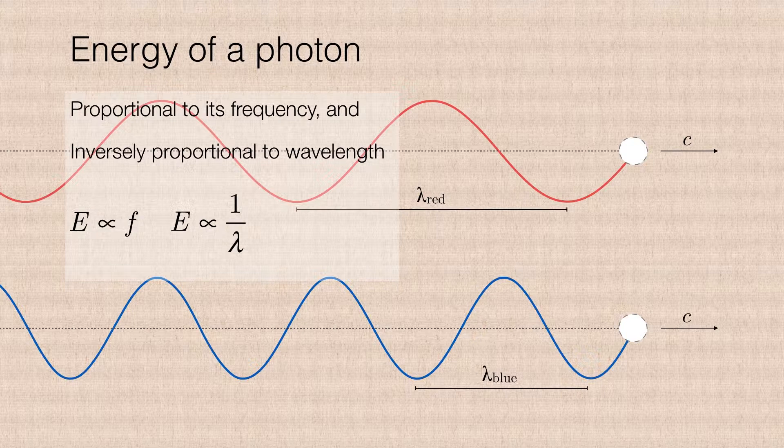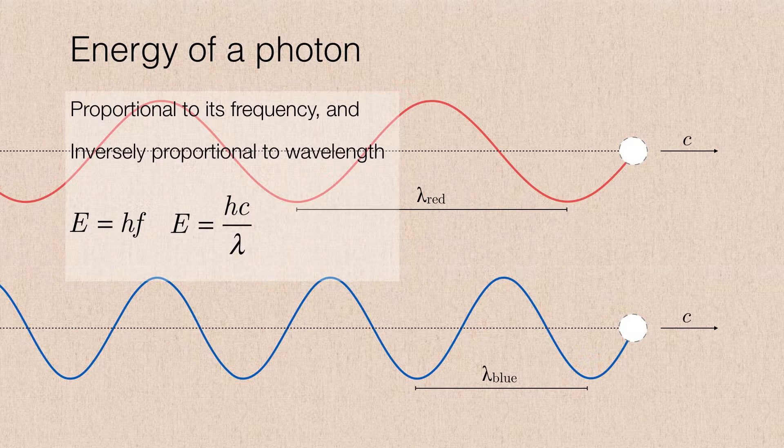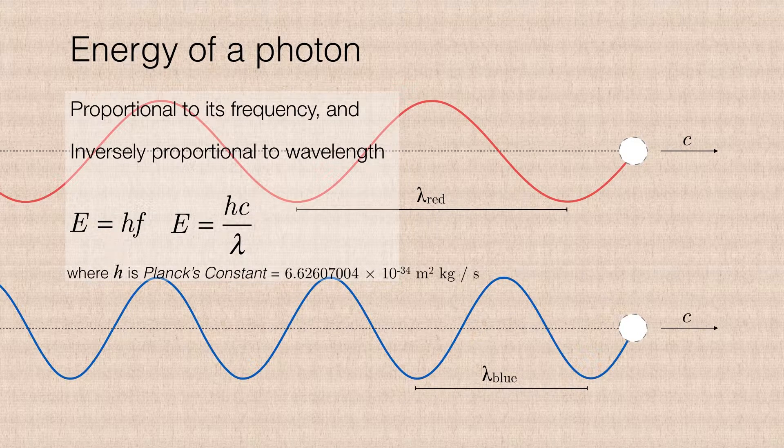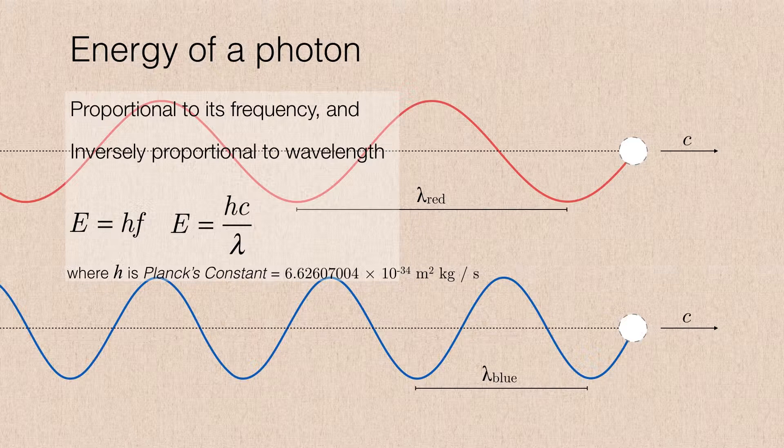Or if we want to make this a more precise representation, the energy is proportional to a constant called the Planck constant. It's just a number to balance out both sides of the equation. It's the Planck constant multiplied by the frequency, or the Planck constant multiplied by the speed of light divided by the wavelength.